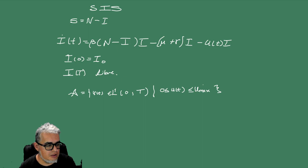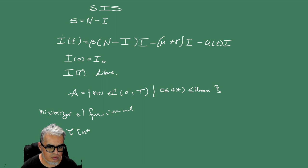Y pues lo que queremos encontrar es encontrar el mejor régimen de tratamiento de tal forma que podamos minimizar la prevalencia y el costo de aplicar el tratamiento. Entonces lo que queremos es minimizar el funcional C de U estrella igual al mínimo sobre los controles admisibles de la integral de 0 a T...